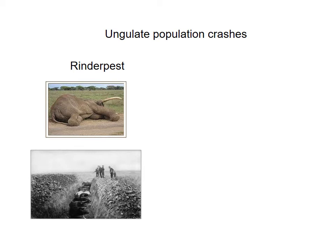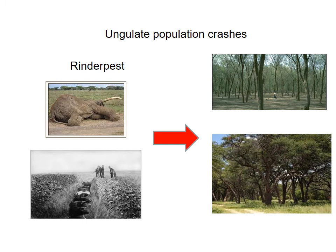We also know that ungulates can spectacularly crash in numbers over time. One of those spectacular crashes was the Rinderpest, which happened in the 19th century and killed off nearly 90% of all ungulates in Africa — a hugely detrimental collapse in the ungulate population. What did we see? It allowed acacia woodlands and other types of woodlands a small window of opportunity where the ungulates were no longer present and the trees were able to respond. We see these large, even-aged stands of woodlands across Africa, giving us a glimpse into the past when trees were released from the pressure that herbivores were exerting on their populations through browsing.